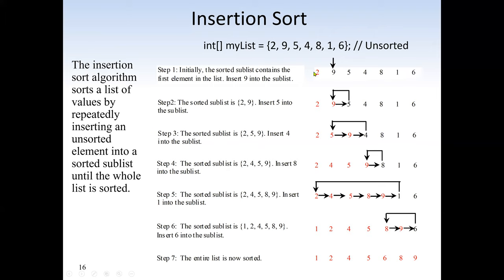In the same example with 2, 9, 5, 4, 8, 1, 6: we assume the first item is sorted. We compare each element with the sorted portion and shift larger values right to insert the new element in its correct position — that's why it's called insertion sort. We insert each item at the right position one at a time, ending with 1, 2, 4, 5, 6, 8, 9.